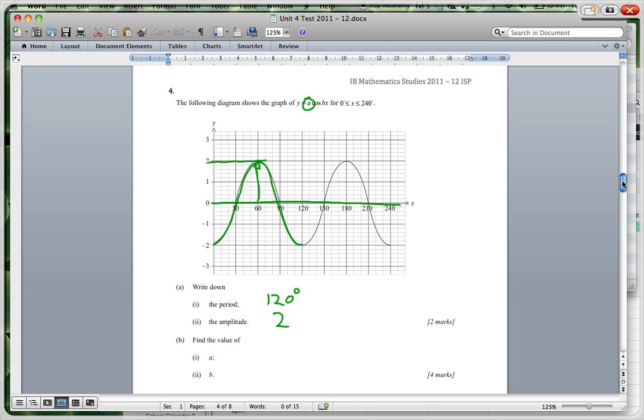And then the values of A and B. So A is the amplitude. So we can straight away say that's 2. B, remember, period equals 360 divided by B. So it's going to be 120 equals 360 divided by B. B must equal 3. 360 divided by... What's the answer to I? Oh, B, I would be 2. Yeah, because you wrote a little minus.